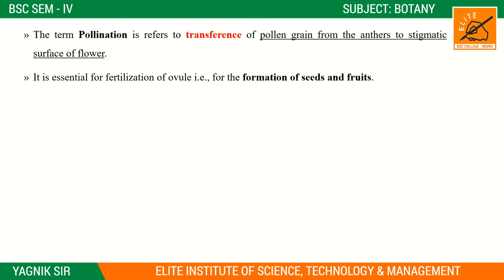This process is called pollination, and it is essential for the fertilization of the ovules. When pollen grains are transferred, the fertilization process begins. This is an essential process for the formation of seeds and fruits after fertilization.